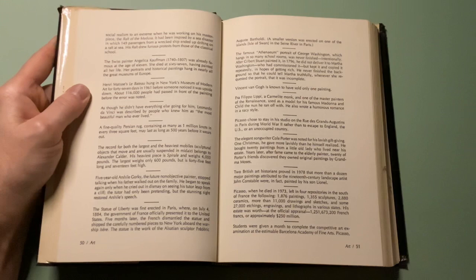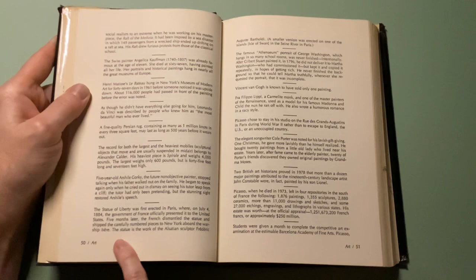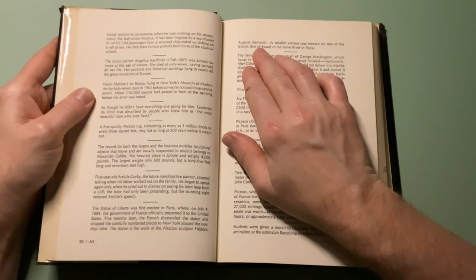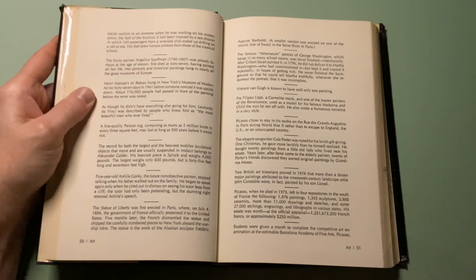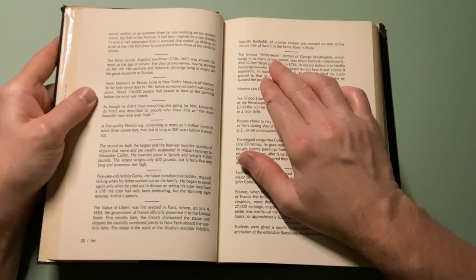The Statue of Liberty was first erected in Paris, where on July 4, 1884, the government of France officially presented it to the United States. Five months later, the French disassembled the statue and shipped the carefully numbered pieces to New York aboard the warship Isère. The statue was the work of Alsatian sculptor Frédéric Auguste Bartholdi. A smaller version was erected on the Isle of Swans in the Seine River in Paris.